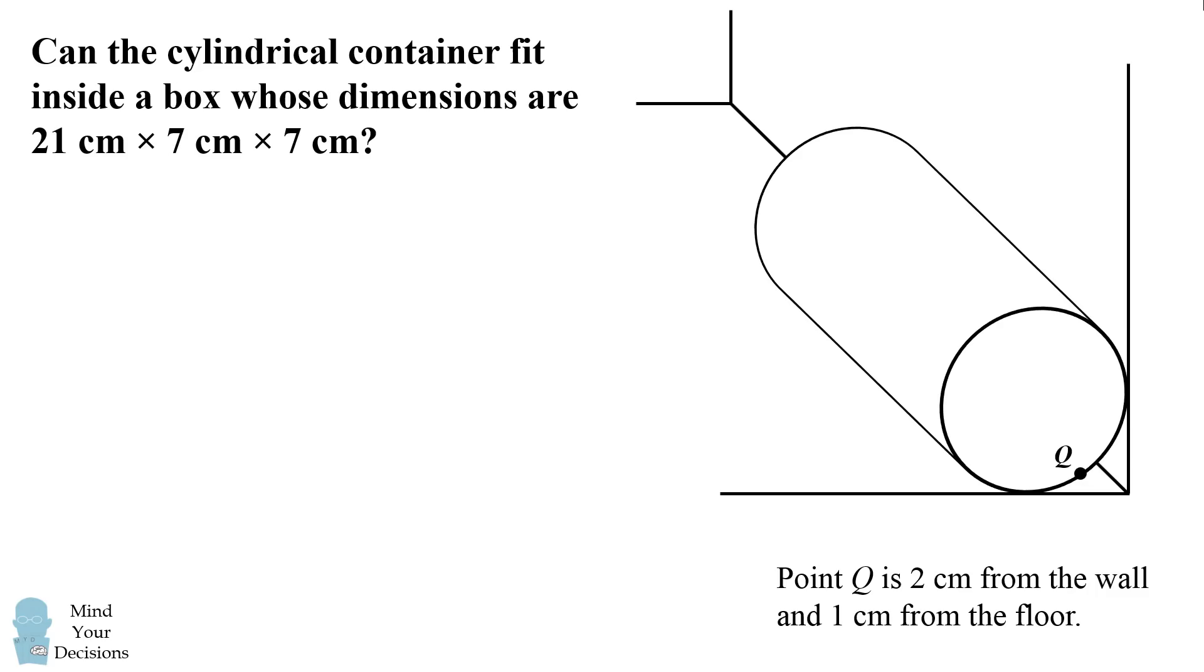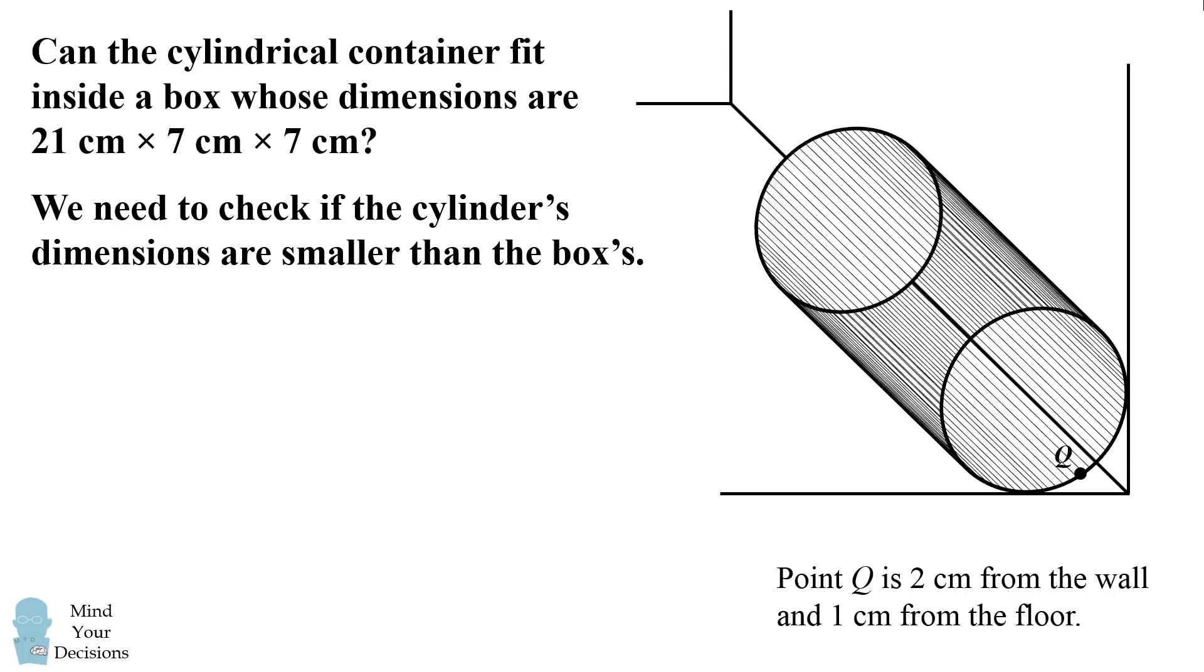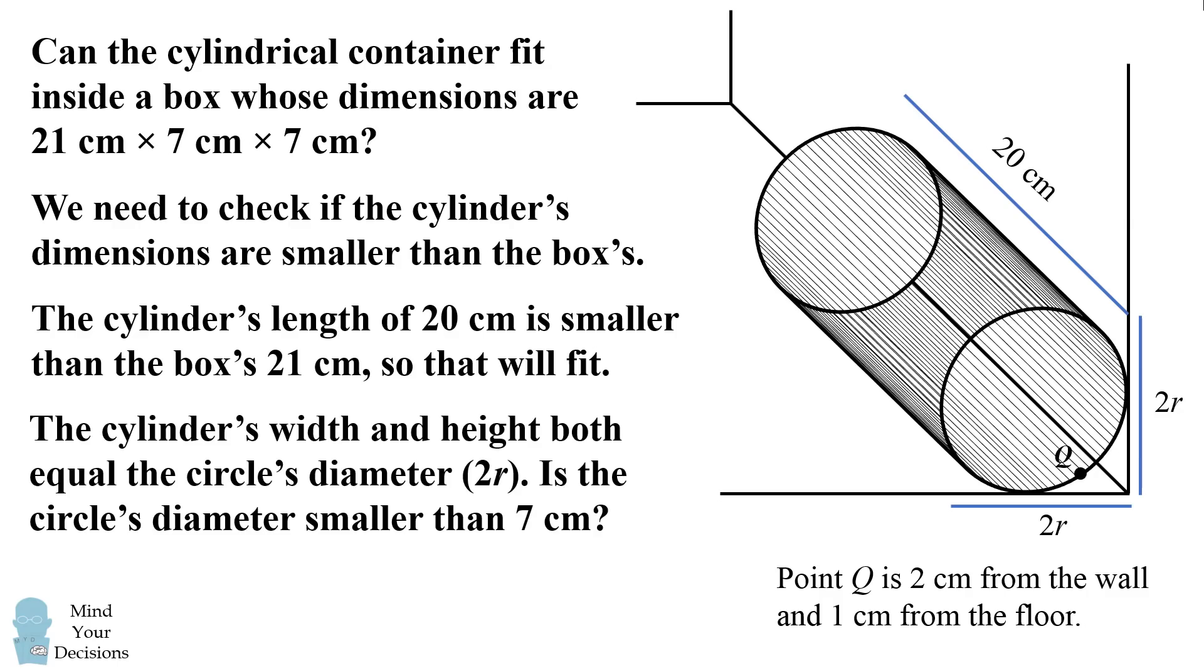So how can we figure out if the cylindrical container can fit inside a box with these dimensions? We need to check if the cylinder's dimensions are smaller than the box's dimensions. We know one dimension of the cylinder is 20 cm, and that is smaller than the box's dimension of 21 cm. So that dimension will fit inside the box. The other dimensions of the cylinder are equal to the diameter of the circle. This will be the width and the height, which will be equal to the circle's diameter. The question is, is the circle's diameter smaller than 7 cm or larger than 7 cm? How can we figure it out?